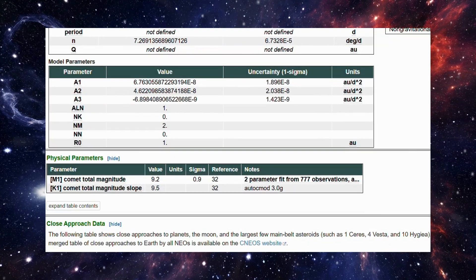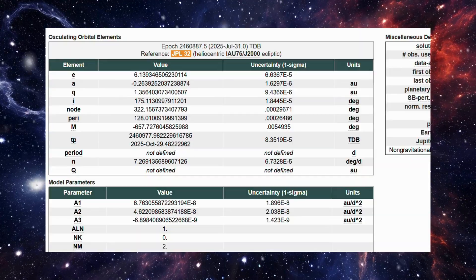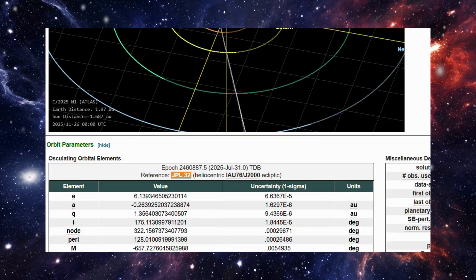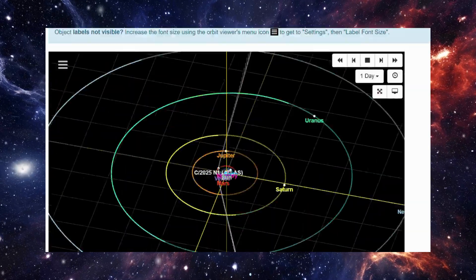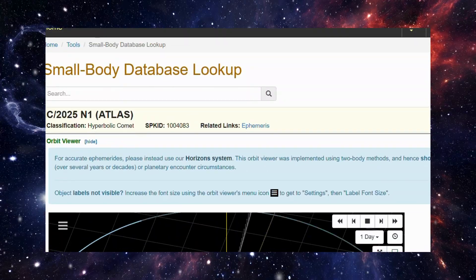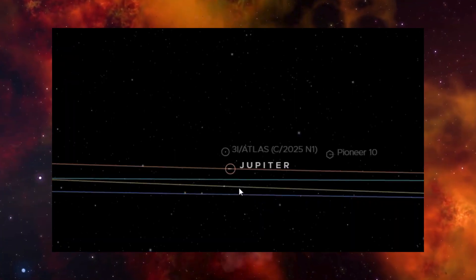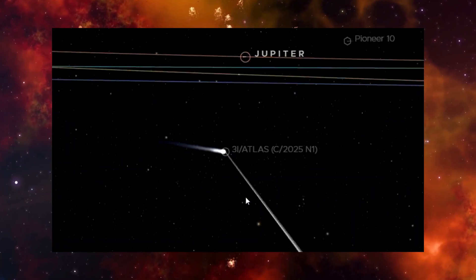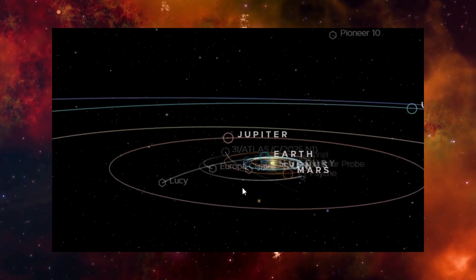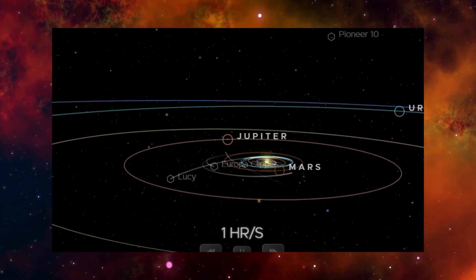Astronomers across the world have been following its path in real time, with observational data coming in from over 230 different observatories, all feeding directly into NASA's Jet Propulsion Laboratory. And based on the latest calculations, 3i Atlas is projected to slide past Jupiter at a distance of about 33 million miles.